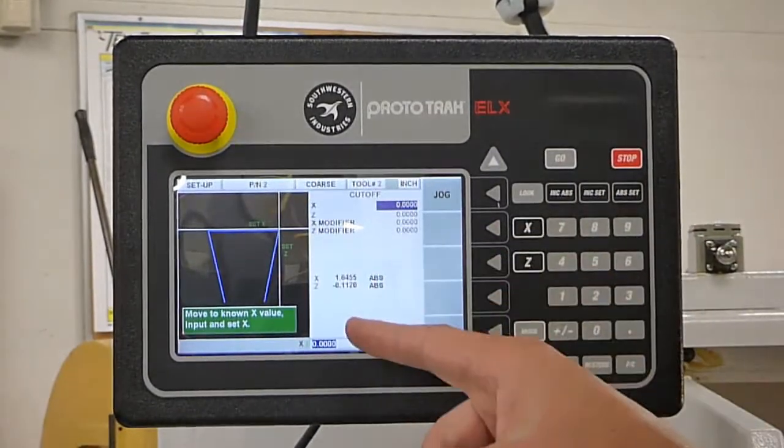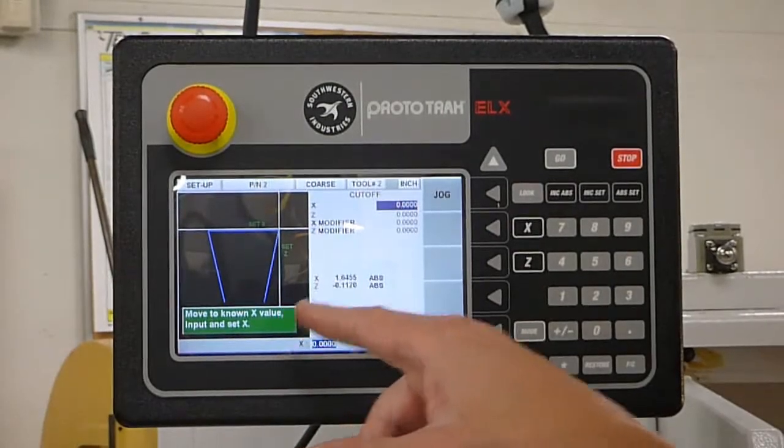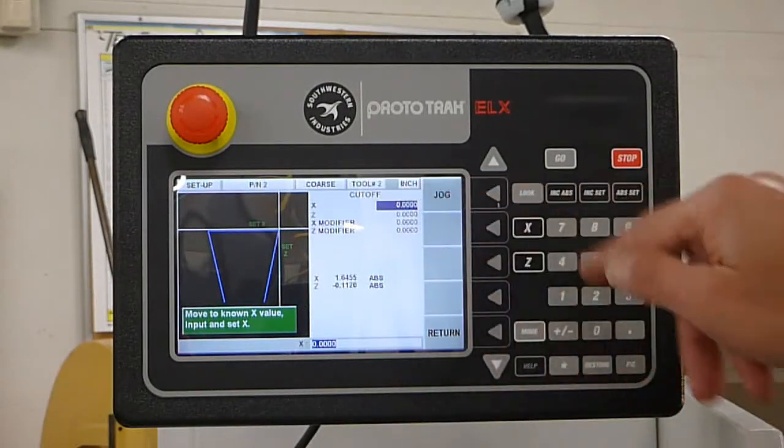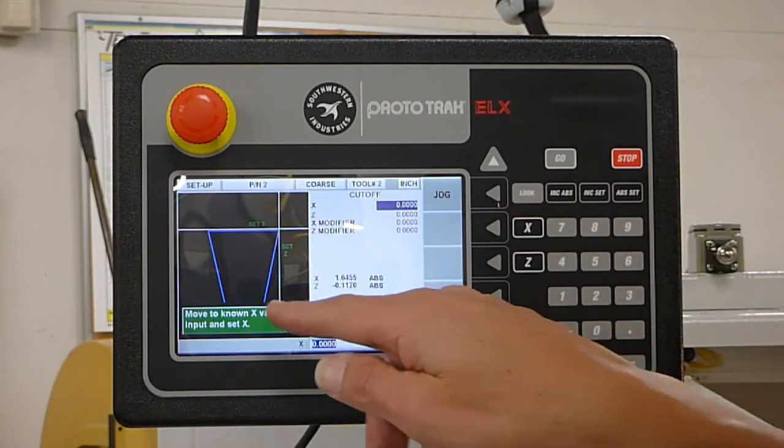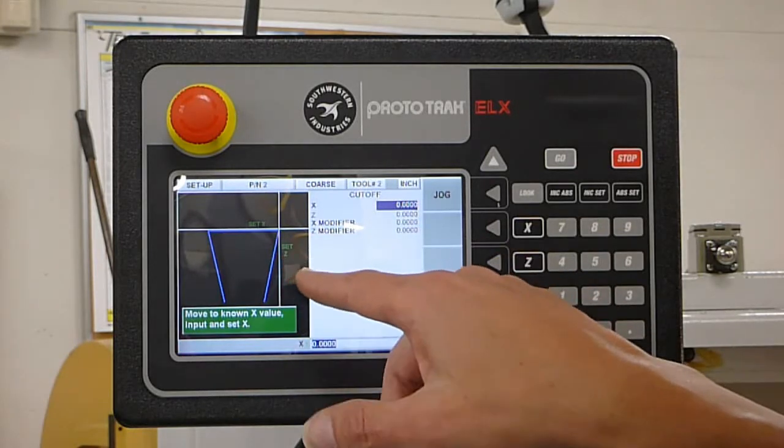Now what we have to do is move the machine to a known x value and then we're going to put that value in the controller. We'll also do the same thing for the z-axis as well.